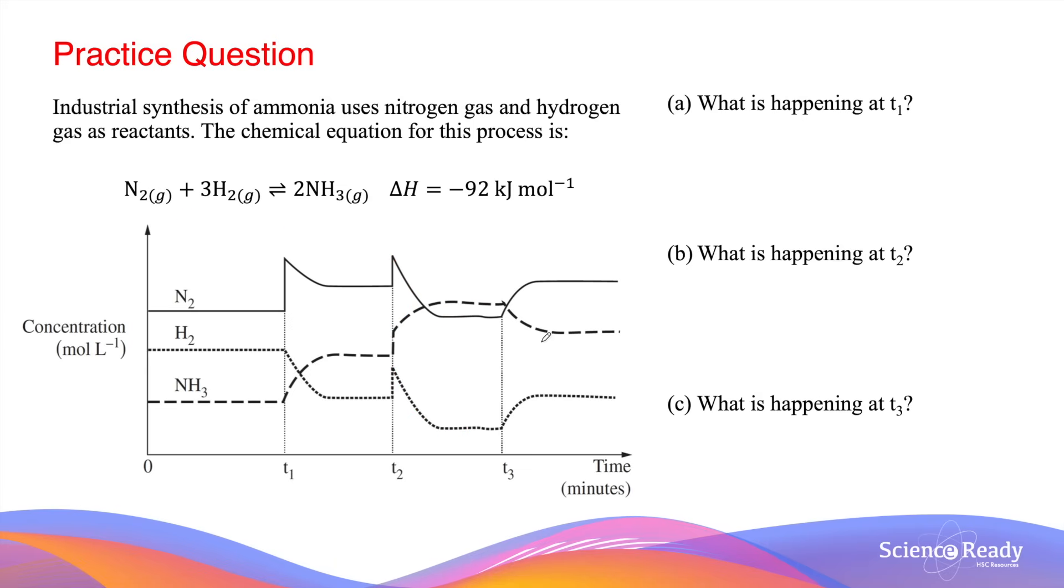At T3, we don't see any of the substances experiencing a spike in concentration. However, they do all gradually experience other increases or decreases in concentration. This type of appearance in a graph is characteristic of a change in temperature.